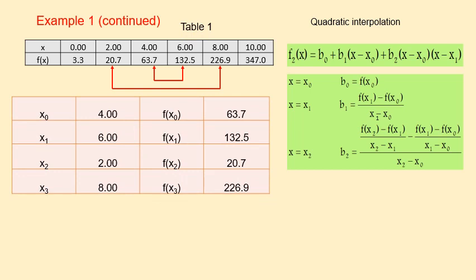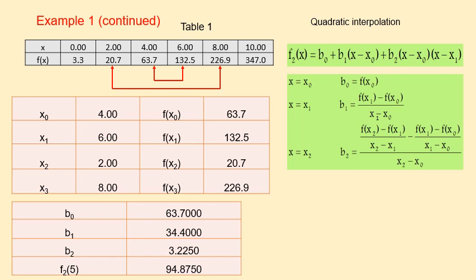Substitute those x0, x1 and x2 into the functions. We gain b0, b1 and b2. At last, we get the result of f(x) is equal to 94.8750.